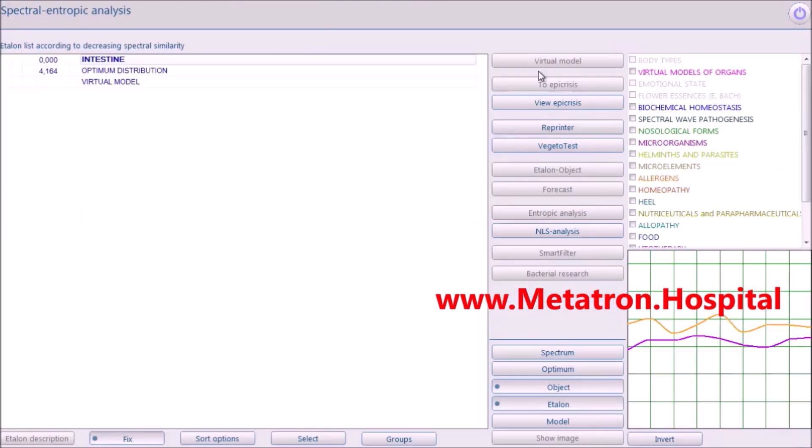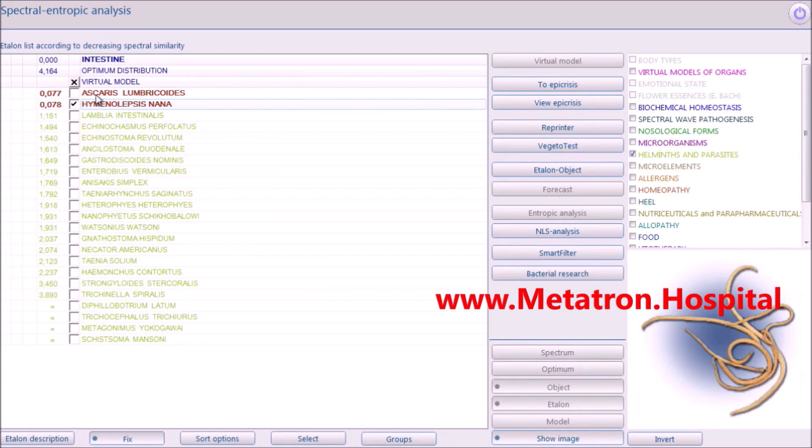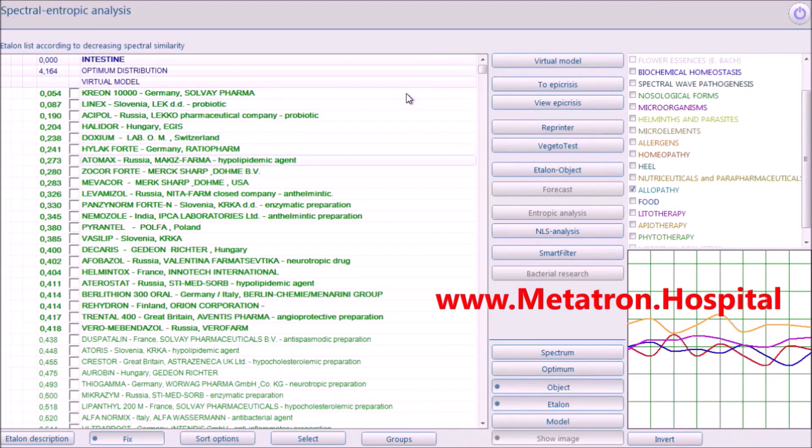Also, the upgraded Metatron can be used with the same features in two ways: in local mode with headsets or in remote mode. New generation of software supports Russian, English, German, French, Spanish, Chinese and Japanese languages.